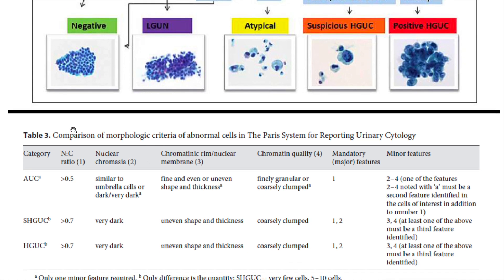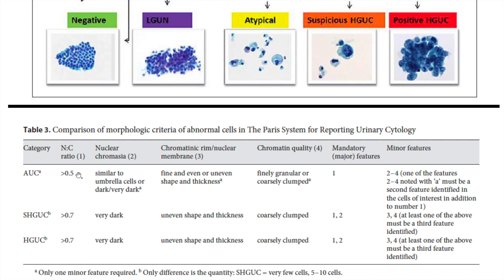Here's a table covering the same content. For these categories — AUC or atypical, suspicious, and high-grade — key into that N-to-C ratio to help determine the category. If the N-to-C ratio is greater than 0.5, it could be in the atypical category. If it's suspicious for high-grade or high-grade, the N-to-C ratio is typically going to be greater than 0.7. At that point, you quantify: am I seeing more than 10 cells? That's positive for high-grade. If it's rare — fewer than five to ten cells — then sign it out as suspicious.